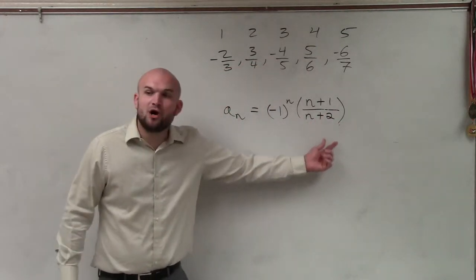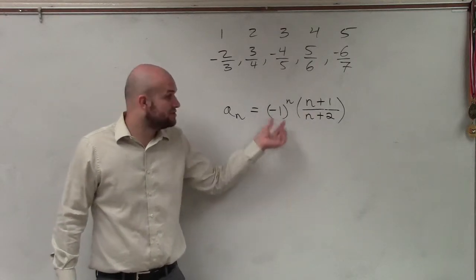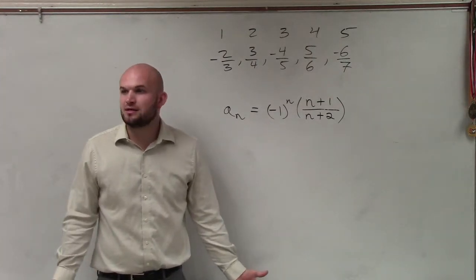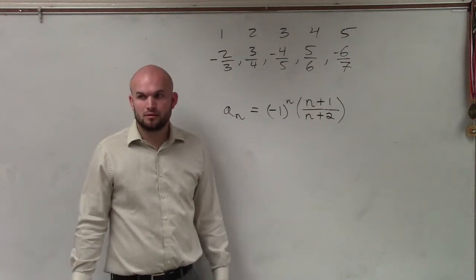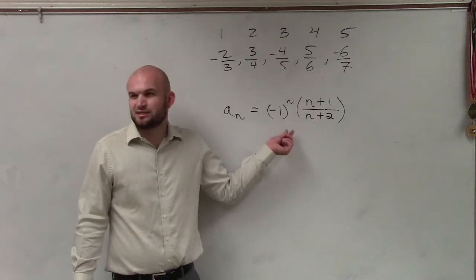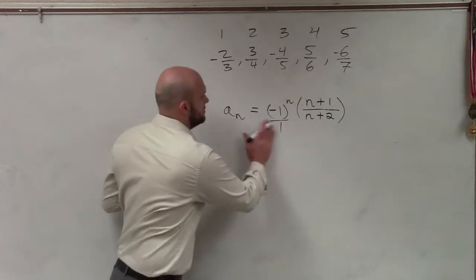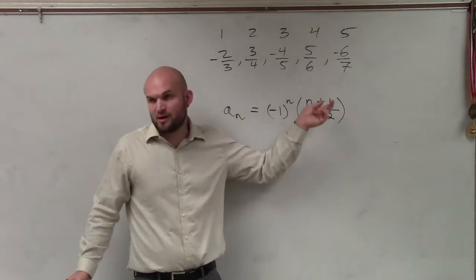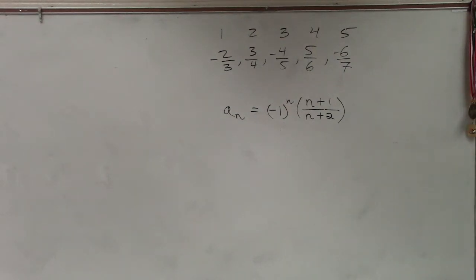And then we're going to be multiplying those by our alternating signs, because what that's going to do is tell us if it's positive or negative. Does that make sense? Can we put the negative one to the N in the numerator? Yeah, I mean it is in the numerator. You can write it over one if you want to. This is just representing it as a whole number, so it would be multiplied by the numerator or in front. Cool? No questions? Everybody feels good on that?